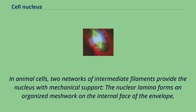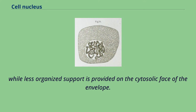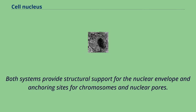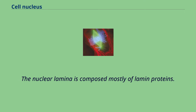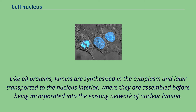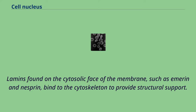In animal cells, two networks of intermediate filaments provide the nucleus with mechanical support. The nuclear lamina forms an organized meshwork on the internal face of the envelope, while less organized support is provided on the cytosolic face of the envelope. Both systems provide structural support for the nuclear envelope and anchoring sites for chromosomes and nuclear pores. The nuclear lamina is composed mostly of lamin proteins. Like all proteins, lamins are synthesized in the cytoplasm and later transported to the nucleus interior, where they are assembled before being incorporated into the existing network of nuclear lamina. Lamins found on the cytosolic face of the membrane, such as emerin and nesprin, bind to the cytoskeleton to provide structural support.